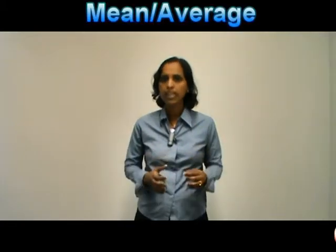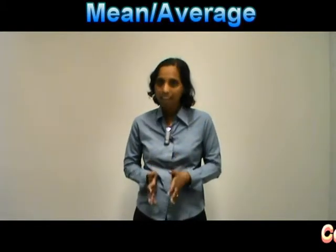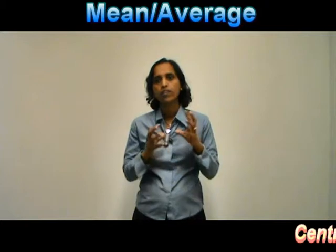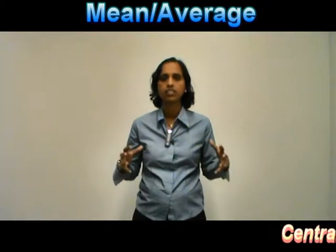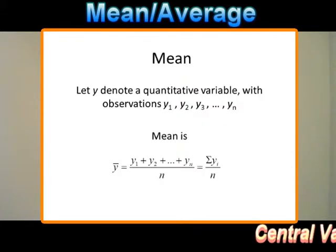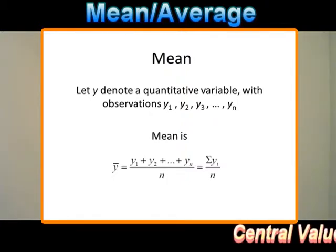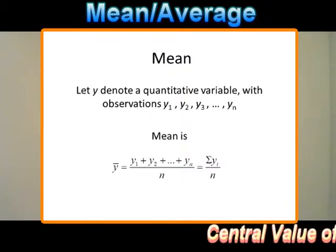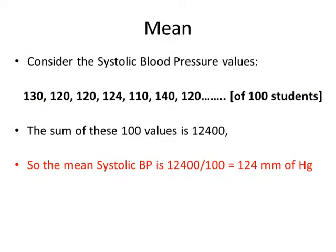We have all heard about these terms earlier. Let's look at the meaning of each. Mean, also known as average, is a value which gives you the central value of the data set. To calculate the mean, we take a sum total of all the values in the given data set and divide it by the total number of observations in the data set. For example, if we want to find the mean blood pressure of 100 students on whom blood pressure measurements have been made.